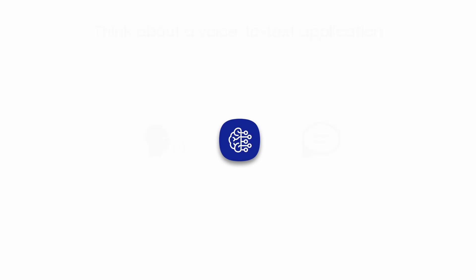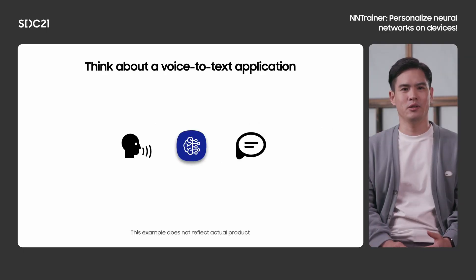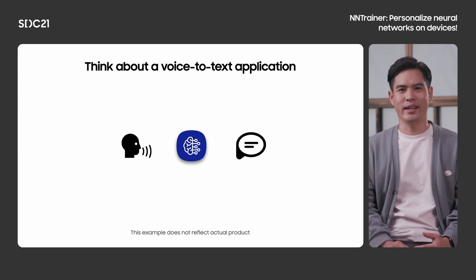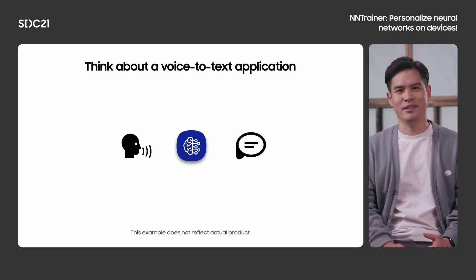Let's begin with the current status of machine learning. Machine learning has become much more prevalent and widely used in applications. Consider an example which generates text from a sequence of voice — you might want to use this to record speech, like a lecture, so that you can have a little database that can be looked up later.